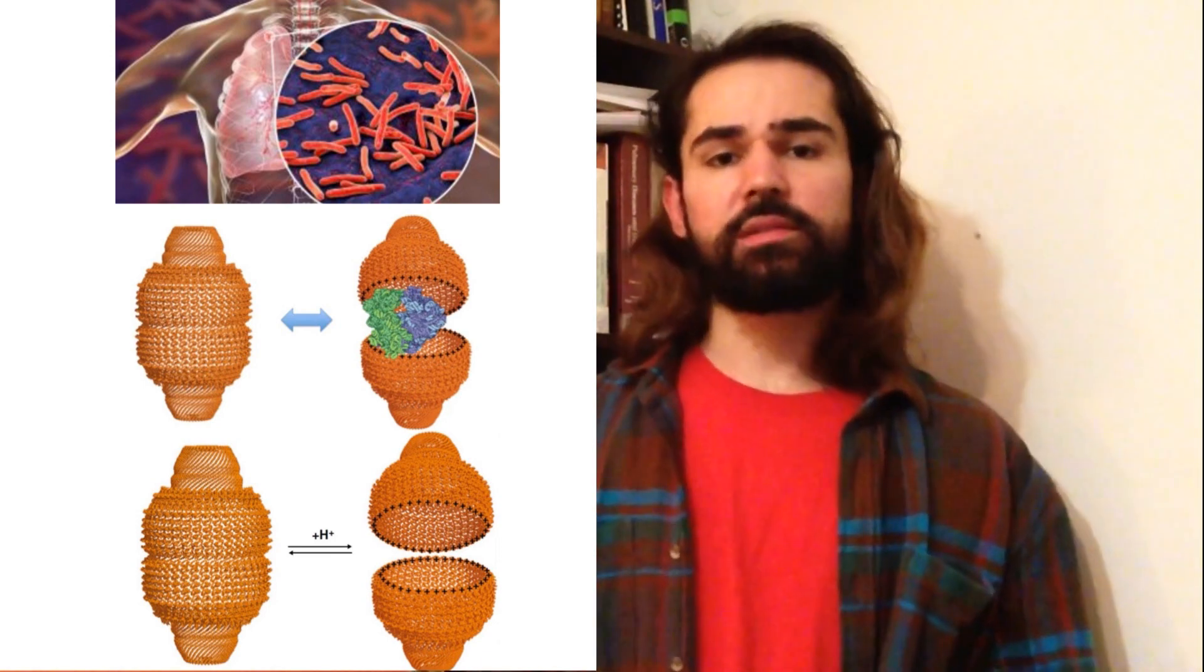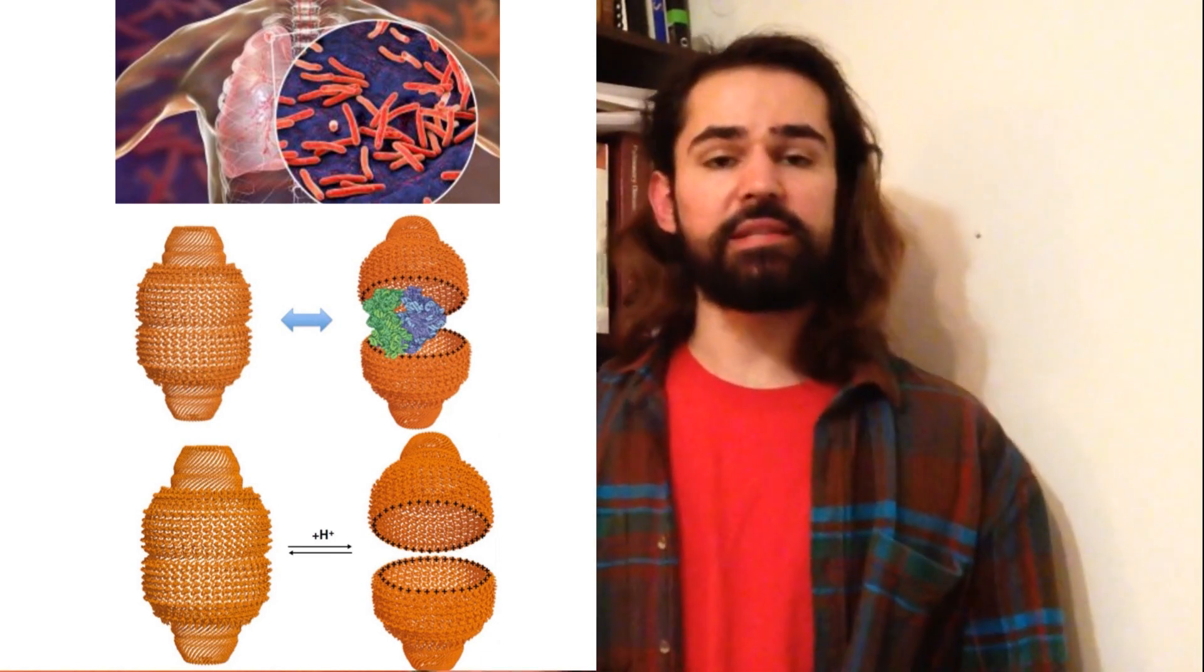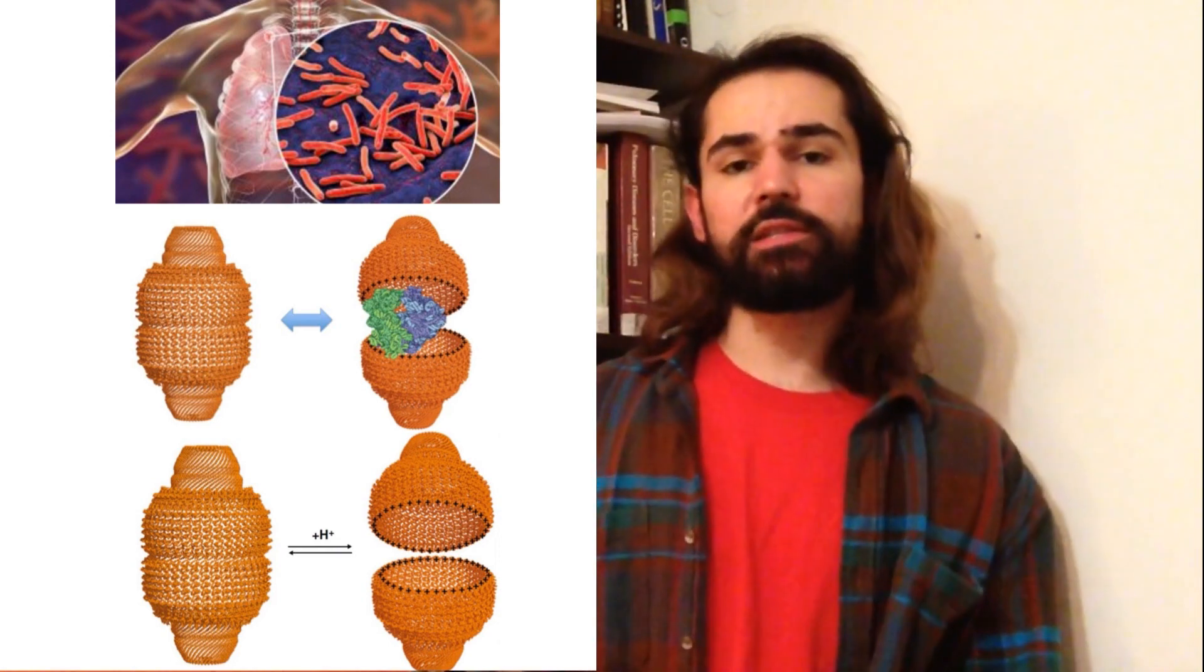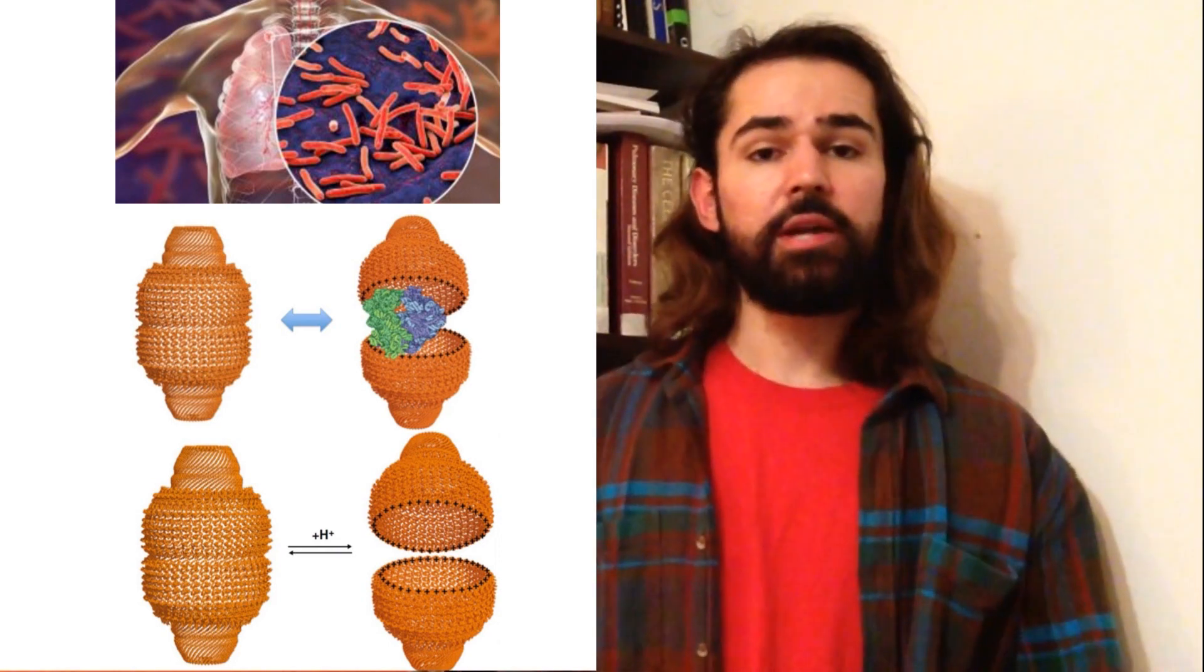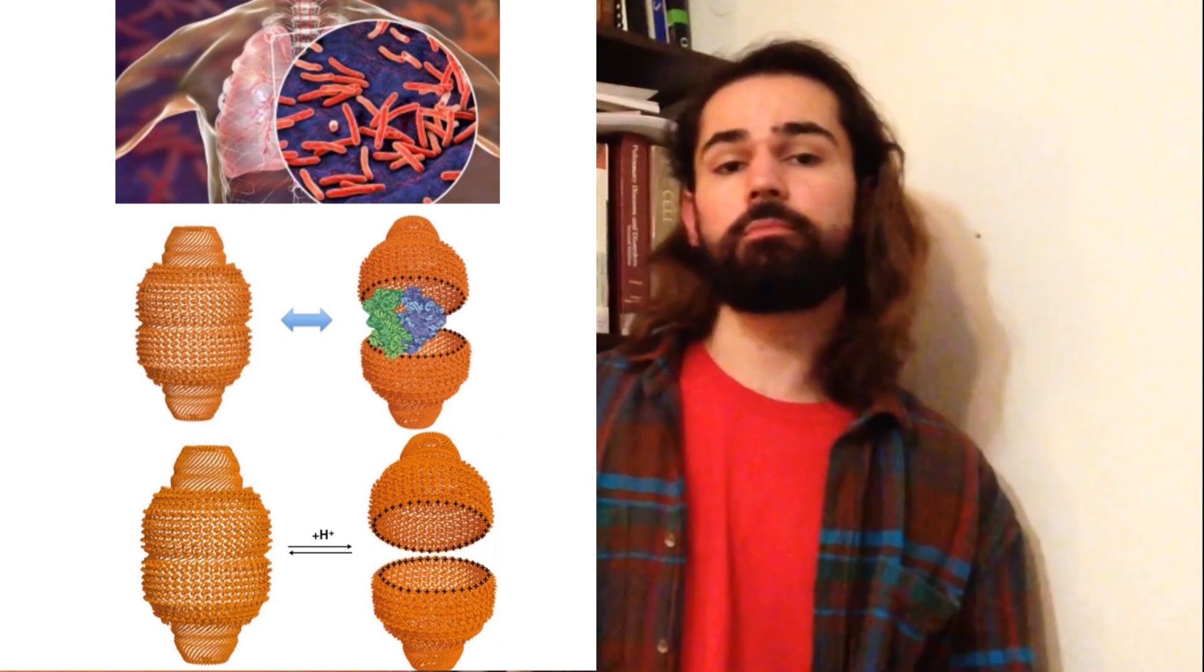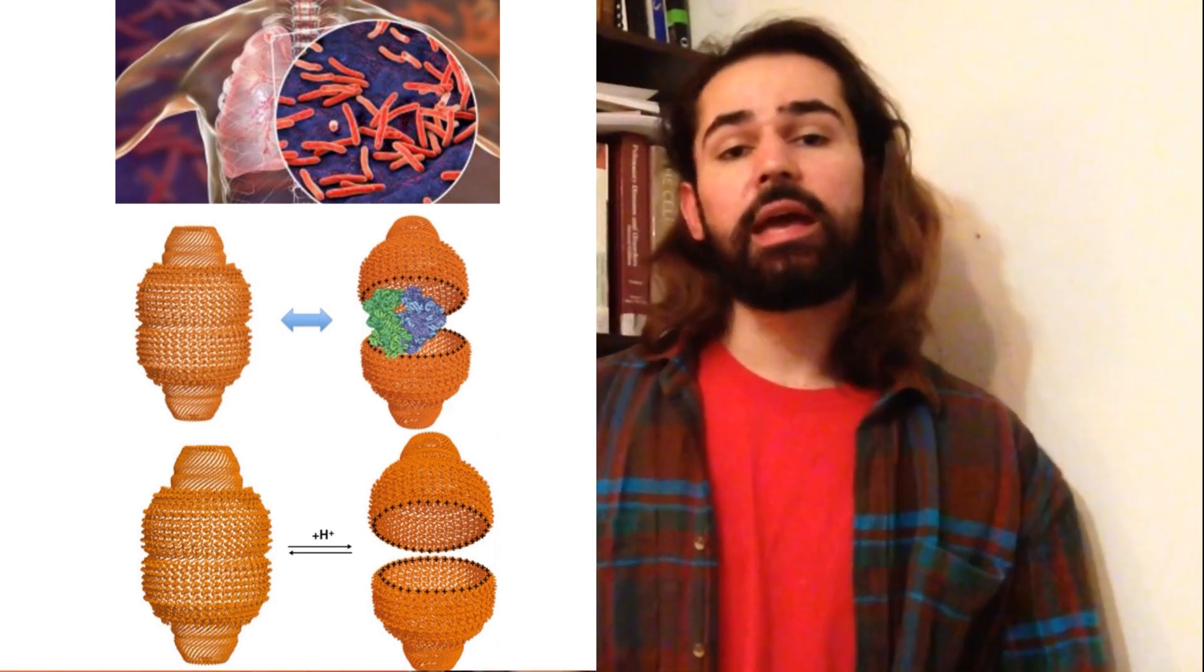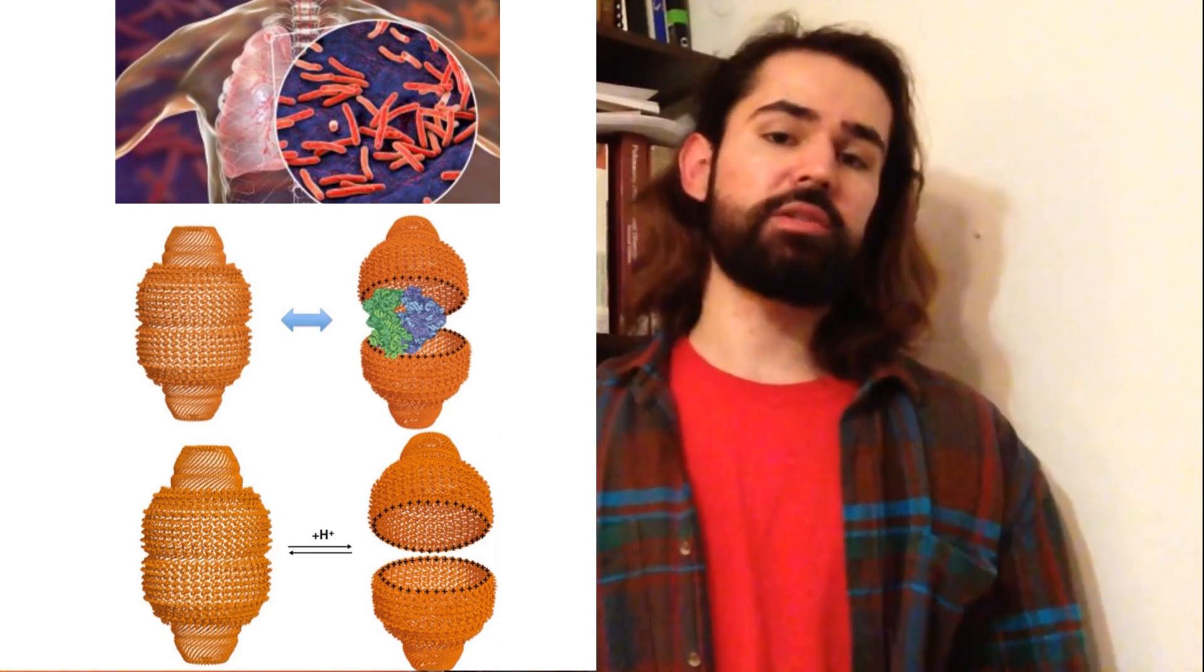You see, once mycobacterium tuberculosis has been engulfed by a macrophage, it is able to avoid the process of its own destruction, thus turning the macrophage into a replication-permissive environment that is going to shuttle the pathogen into the more distant parts of the lung tissue.